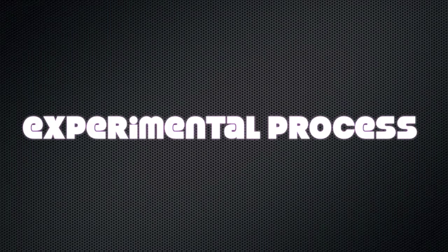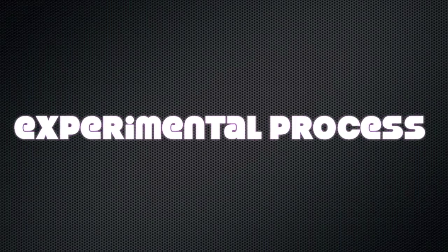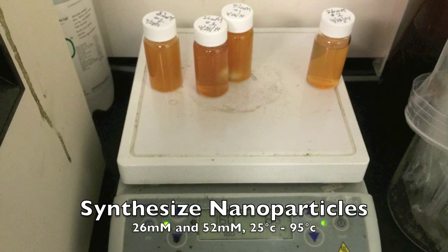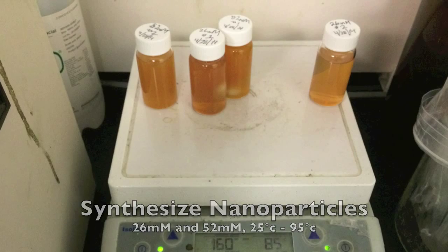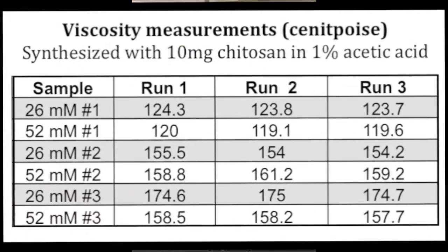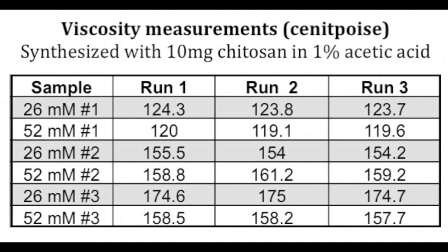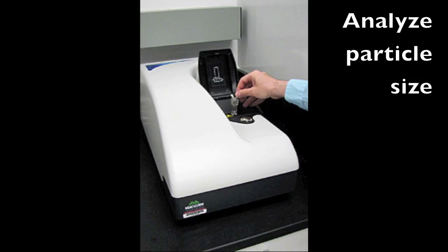This part of our video will cover our experimental processes and the data that we acquired from doing them. We synthesized our nanoparticles with two different concentrations and a range of temperatures. We then analyzed the solution for viscosity, trying to determine if nanoparticle size had any effect more so than the concentration of chitosan. It was discovered that the stirring of our solution actually lowered the viscosity more than anything else.